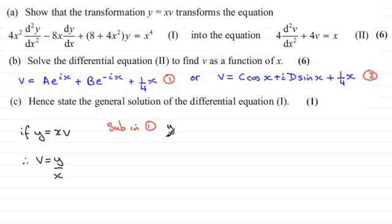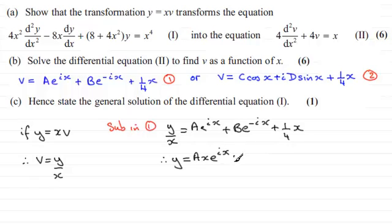So, we've got y over x equals ae to the ix plus be to the power minus ix plus a quarter x. And if I multiply through by x, we end up with y equals ae to the ix plus bx times e to the minus ix plus a quarter x squared.